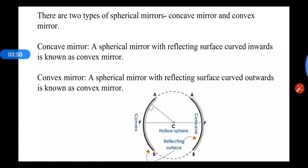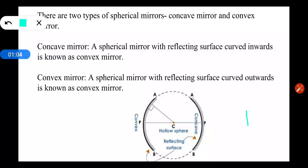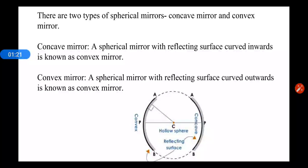Now let us see the difference between a concave mirror and a convex mirror. A convex mirror is a mirror whose reflecting surface is curved outward, whereas a concave mirror is a mirror whose reflecting surface is curved inward. As we can see in this figure, this surface is curved outward, so this is a convex mirror, and this mirror where the reflecting surface is curved inward is a concave mirror.